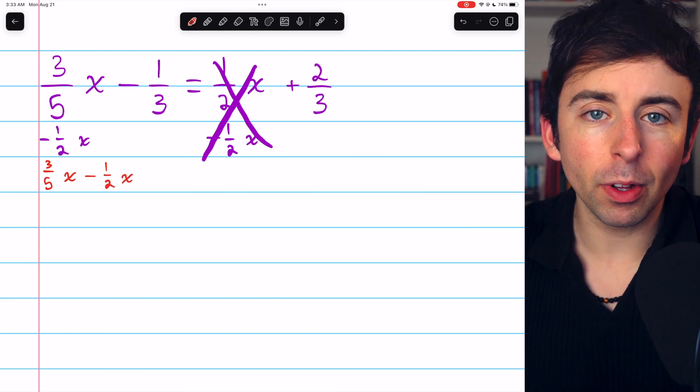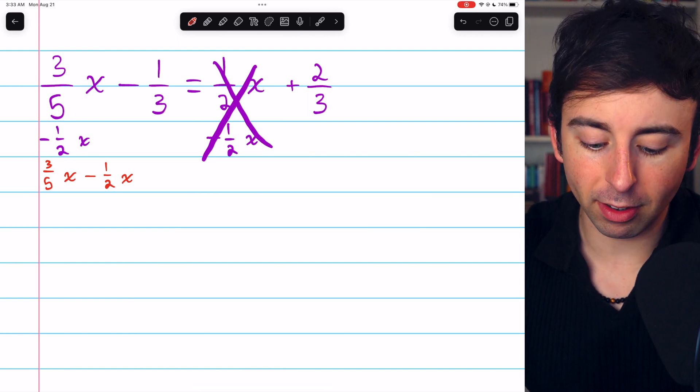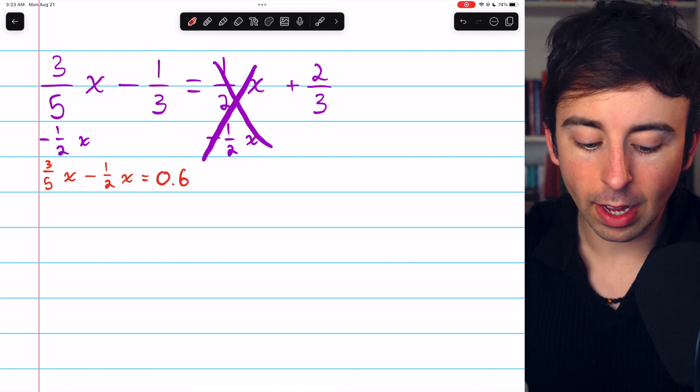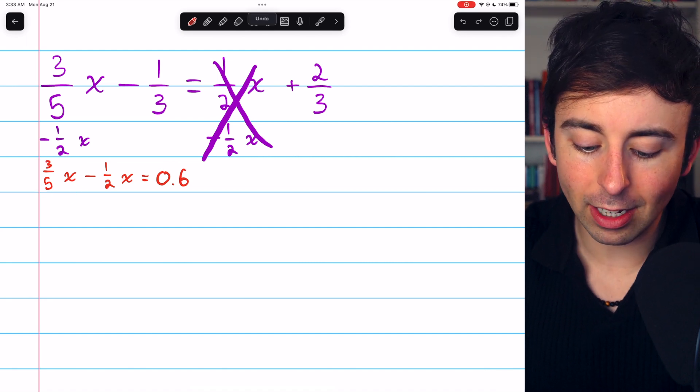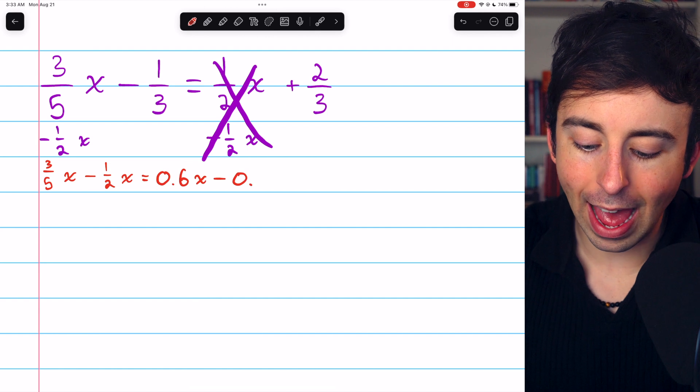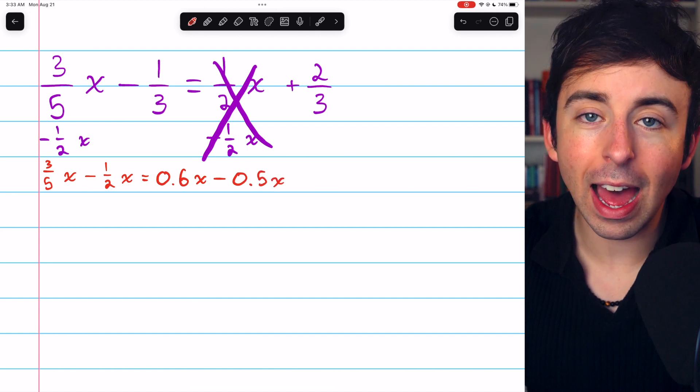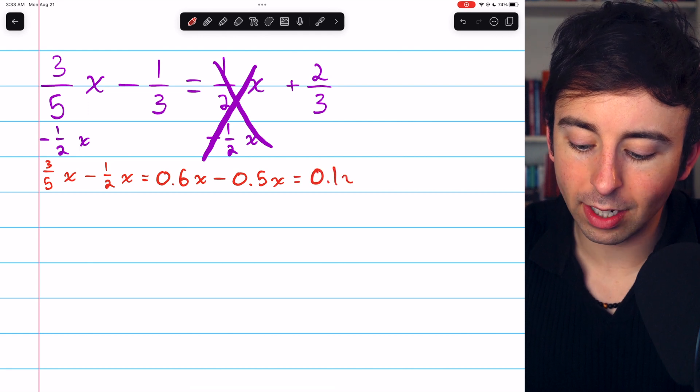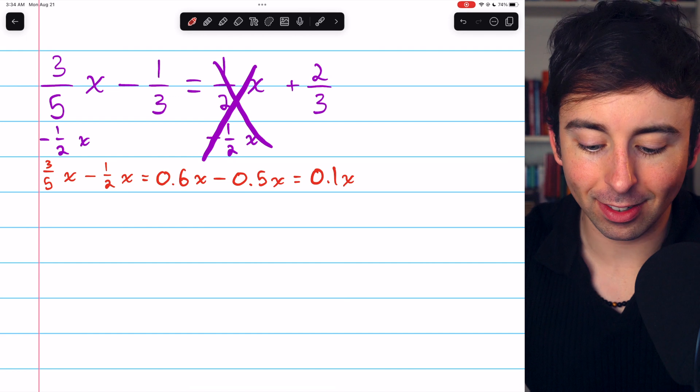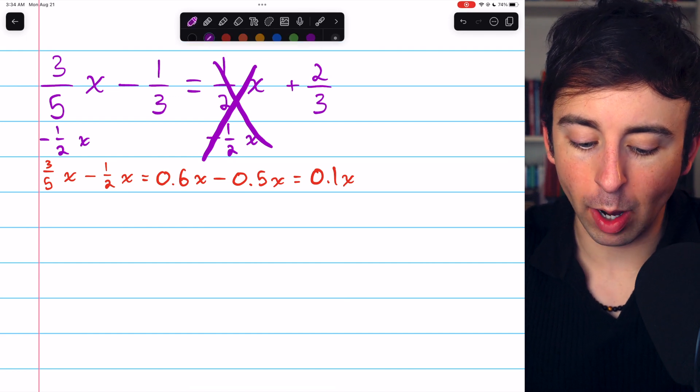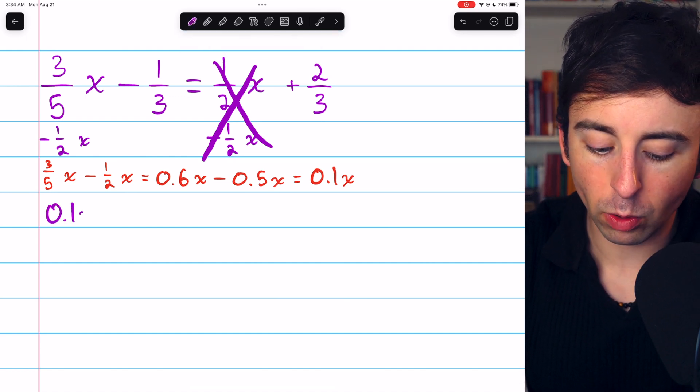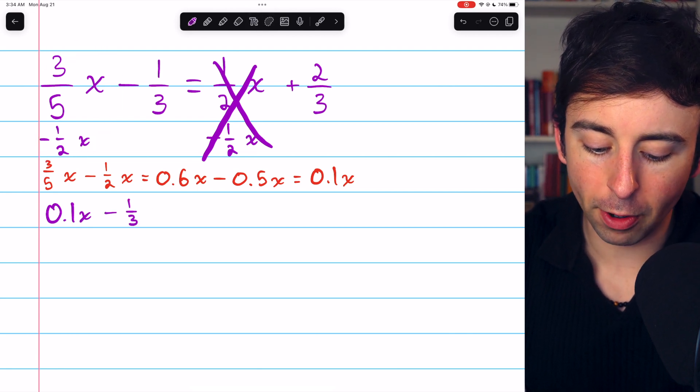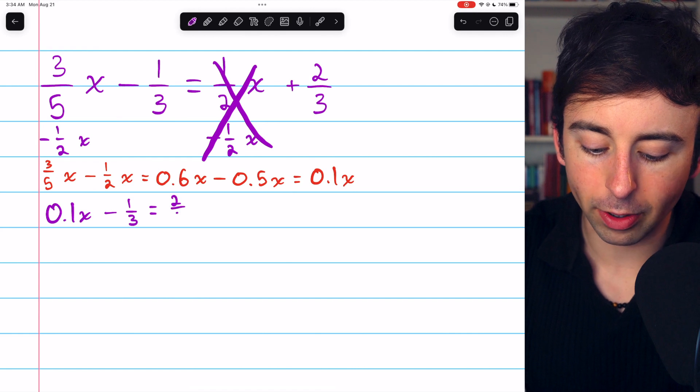This is an example where writing these things as decimals actually makes the process easier. 3/5 is the same as 0.6, so 3/5x is 0.6x, and 1/2x is the same as 0.5x. Then it's immediately clear that this leaves us with 0.1 or 1/10x. So now we can go on and write our equation. We've got 0.1x, after combining those like terms, minus 1/3 equals 2/3 on the right.